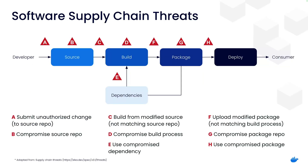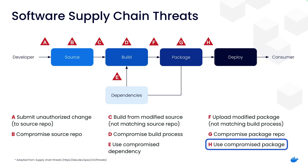To better understand how threats can manifest at every stage of the software supply chain, let us look at this graphic adapted from SLSA, which stands for the Supply Chain Levels of Software Artifacts framework. Starting with A, when an unauthorized change is submitted to the source repository, to H, using a compromised package, we can clearly see attacks can occur at every link of the software supply chain.